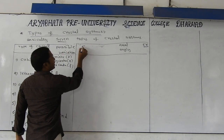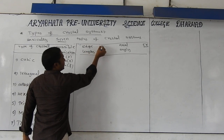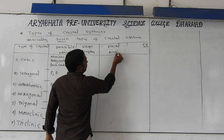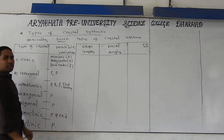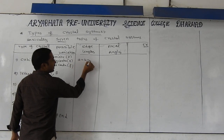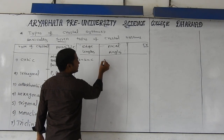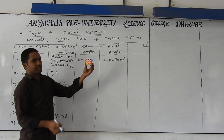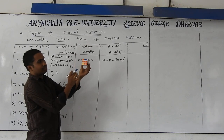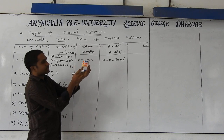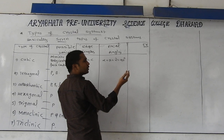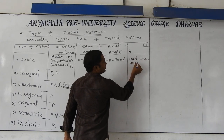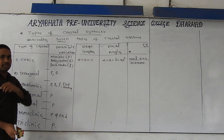Now we discuss edge lengths and angles. When we get cubic shape, length, breadth, and height should be equal — all edges should be equal — and angles: alpha = beta = gamma = 90 degrees. A simple example: cubic shape, how length, breadth, and height are equal, and angle between any two edges is exactly 90 degrees. Examples for cubic: NaCl, zinc sulfide, and diamond. Diamond comes under which type of crystal system? Cubic crystal system.